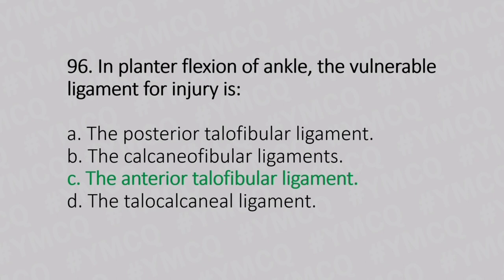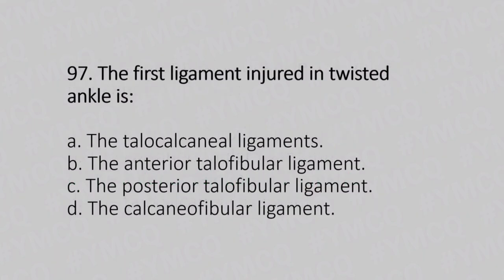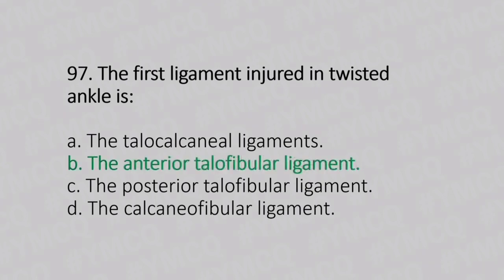Now let's move to question number 97. The first ligament injured in a twisted ankle is. Option A: the talocalcaneal ligament. Option B: the anterior talofibular ligament. Option C: the posterior talofibular ligament. Option D: calcaneofibular ligament. And the answer is Option B, the anterior talofibular ligament.